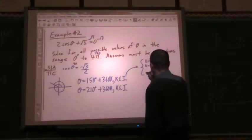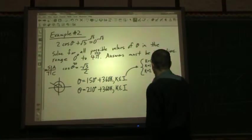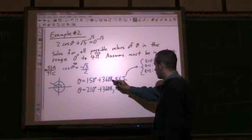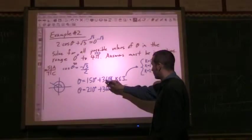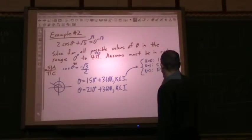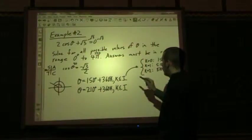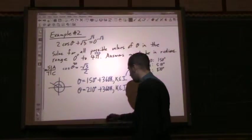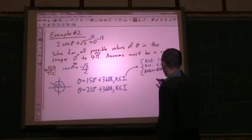Both of those are within the range. So k equals 2, add another 360. 2 times 360, 720, plus 150 is going to give me 870. And that one's not within my range from 0 to 720. So we'll strike that one out.